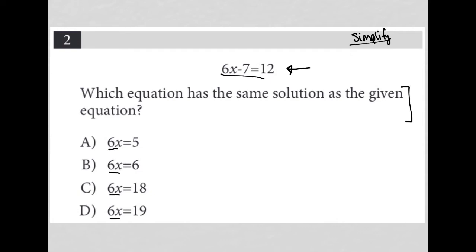I assume I need to take my equation 6x minus 7 equals 12 and also isolate 6x by adding 7 to both sides, which would leave me with 6x equals 19.